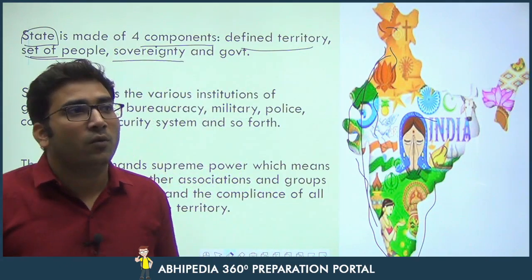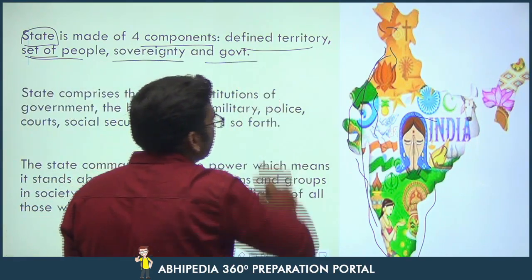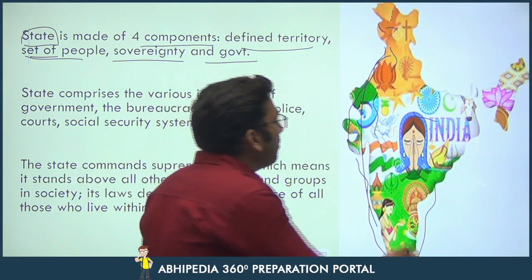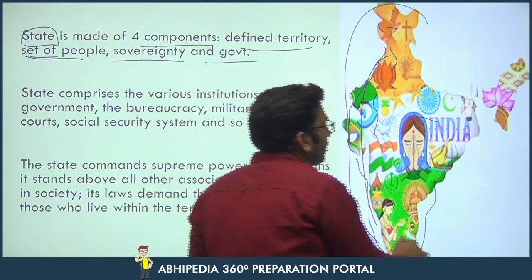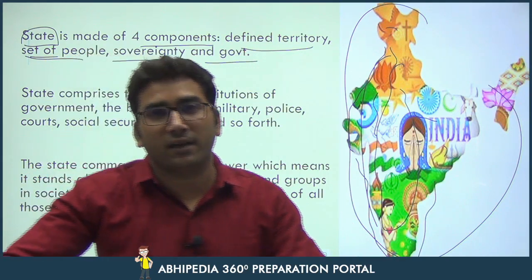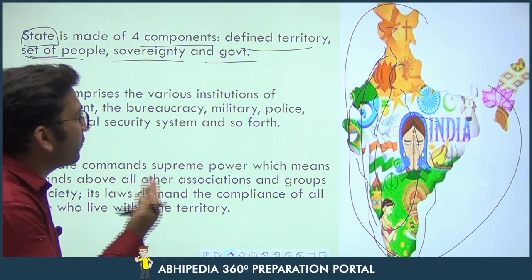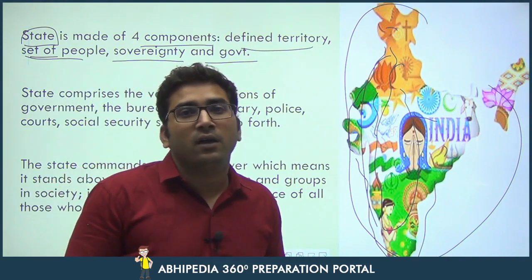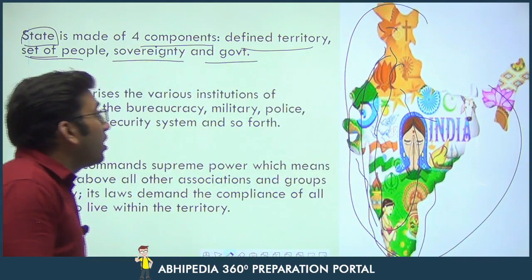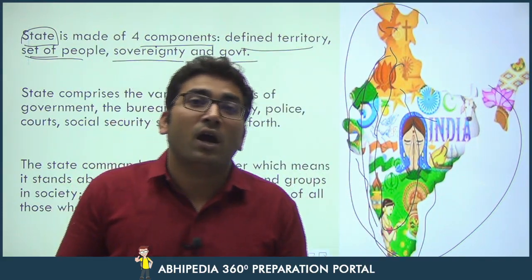And the last component is government. So government and state, though they are different, government is one of the important components of the state. In brief, the state deals with four components: first is the defined territory, second is the set of people or the population, third is sovereignty, and the last is the government — which is an important component of the state because it actually shows you how the state looks.